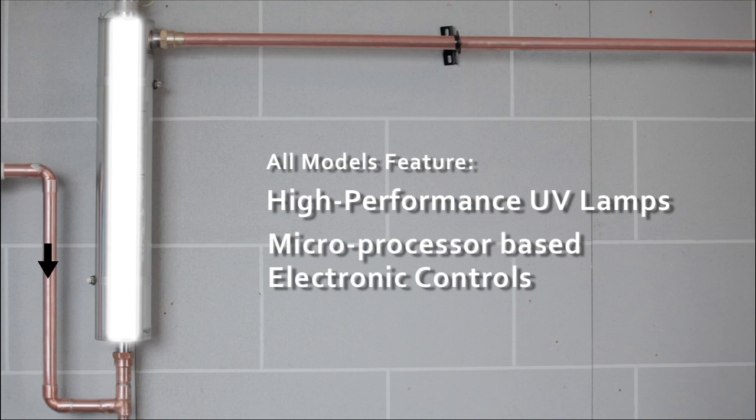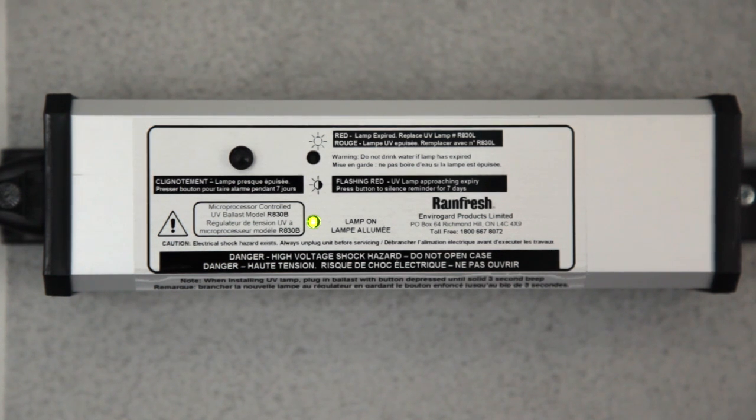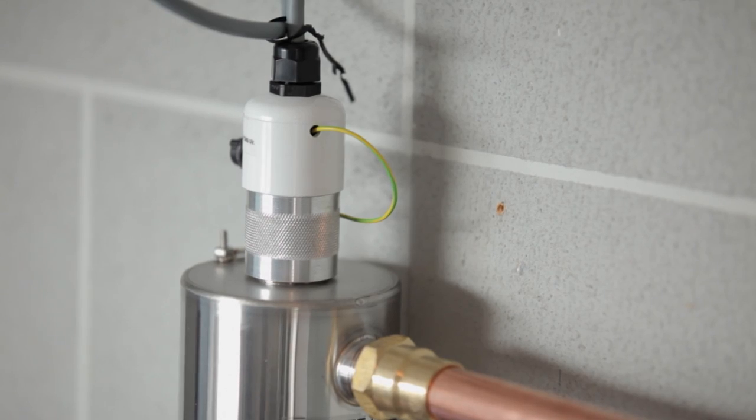The UV system is rated at 8 GPM and includes a 5 micron sediment filter. It features high performance UV lamps and microprocessor based electronic controls with annual lamp replacement reminder alarms, and requires virtually no routine maintenance.